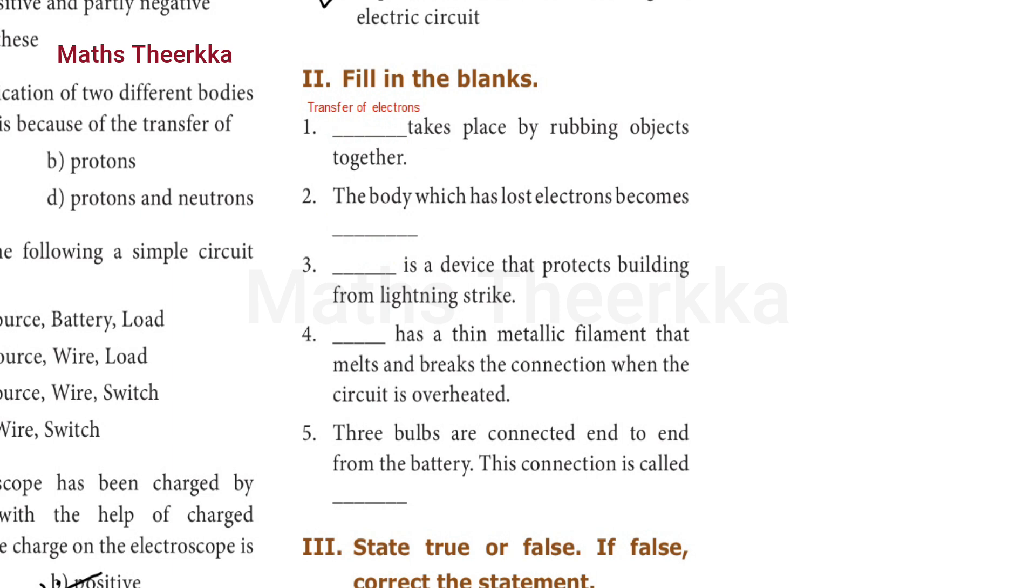Third one: blank is a device that protects building from lightning strikes. So the answer is lightning arrestor. L-I-G-H-T-N-I-N-G lightning, A-R-R-E-S-T-E-R arrestor.